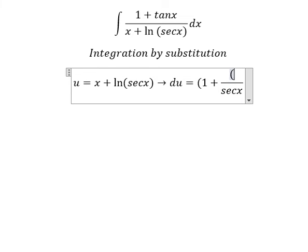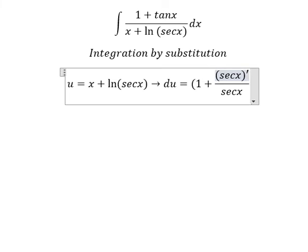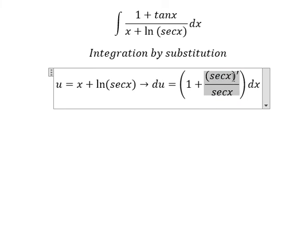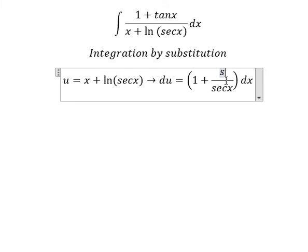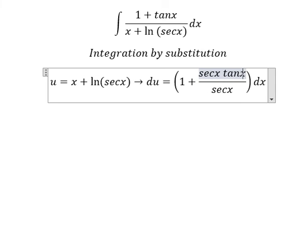We continue to take the first derivative of secant of x. This will give us secant of x tan x.